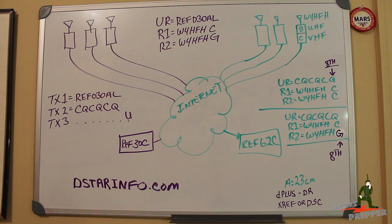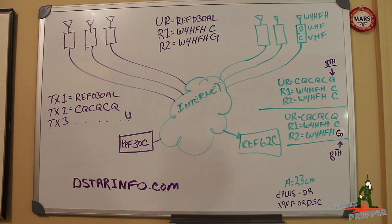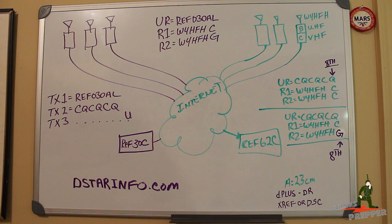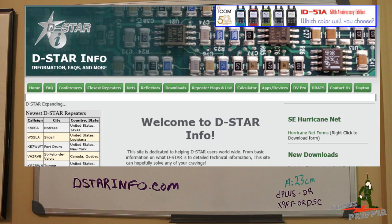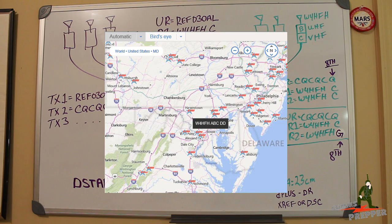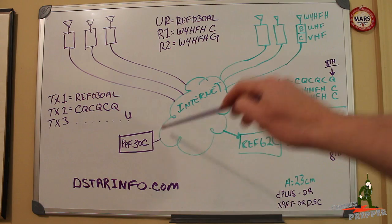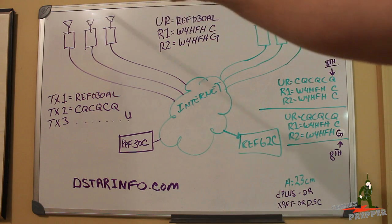So let's say I want to connect to a distant system on the other side of the country and go through a reflector. Then we would change our routing table here. Now the website you want to check out when doing this is called dstarinfo.com, and it has a list of all the systems out there by maps, and a list of all the reflectors. So in this example, and I just picked one off the website, Reflector 30 Charlie has a cluster of repeaters connected to it.